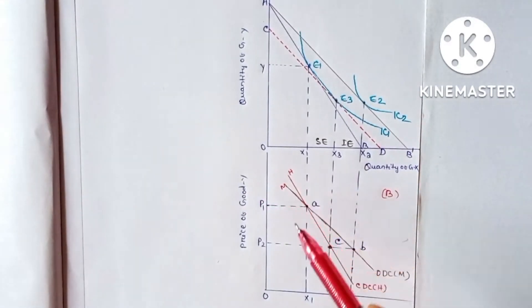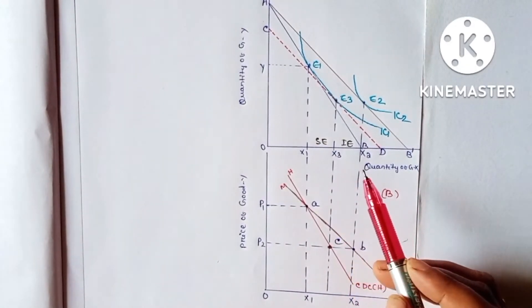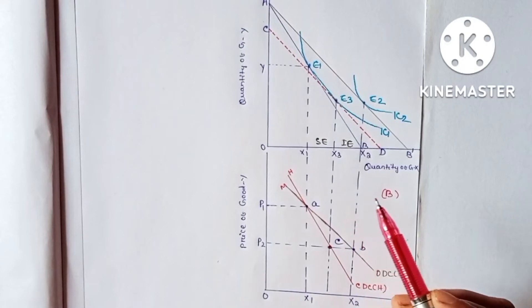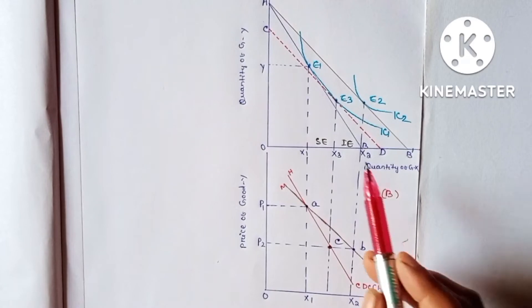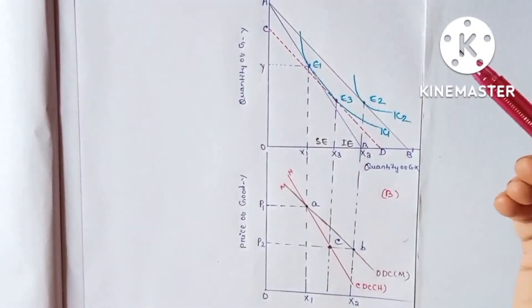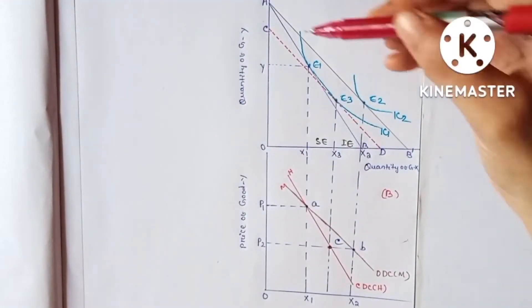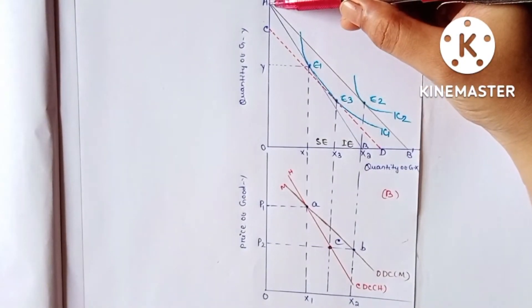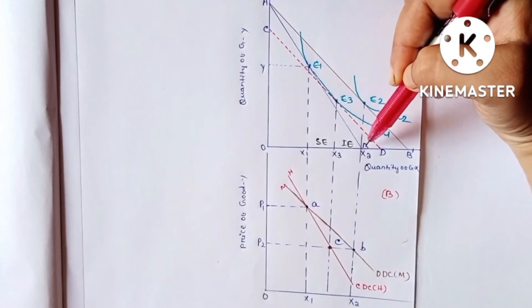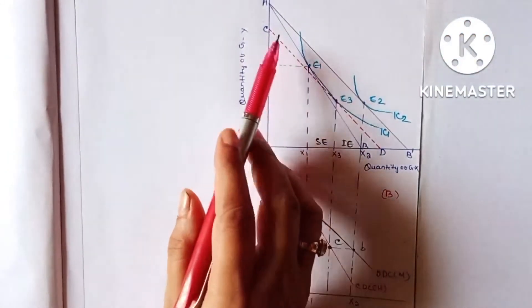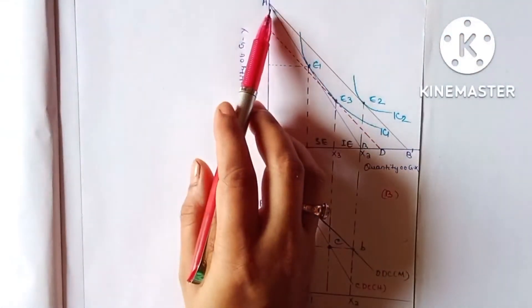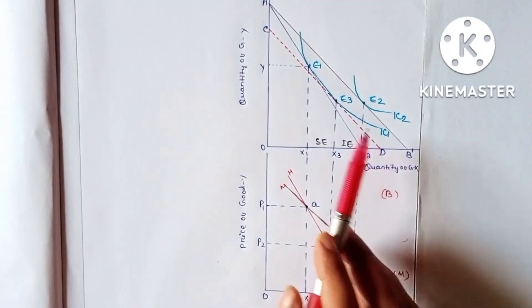Suppose the price of good X decreases. When the price of good X falls, the budget line shifts outward. The old budget line was AB, and when the price of good X decreases, the budget line shifts from AB to AB1 — an outward shift.